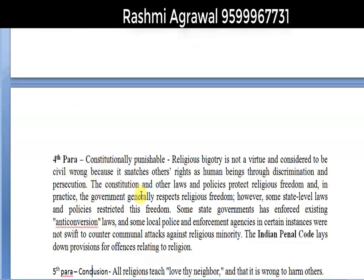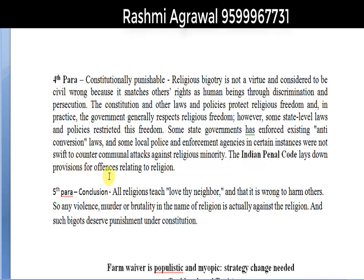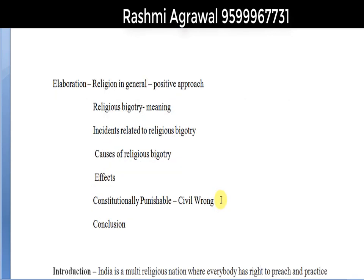The constitution and other laws and policies protect religious freedom, and in practice the government generally respects religious freedom. However, some state-level laws and policies restrict this freedom, and some state governments have enforced existing anti-conversion laws. Some local police and enforcement agencies in certain instances were not swift to counter communal attacks against religious minorities. The Indian Penal Code lays down provisions for offenses relating to religion — you can elaborate on this. In the fifth paragraph, I draw the conclusion: all religions teach love thy neighbor and that it is wrong to harm others. So any violence, murder, or brutality in the name of religion is actually against religion, and such bigots deserve punishment under the constitution. In my conclusion I have mentioned religious bigots, punishment, and constitution — this is how you write your essay, following the skeletal framework.